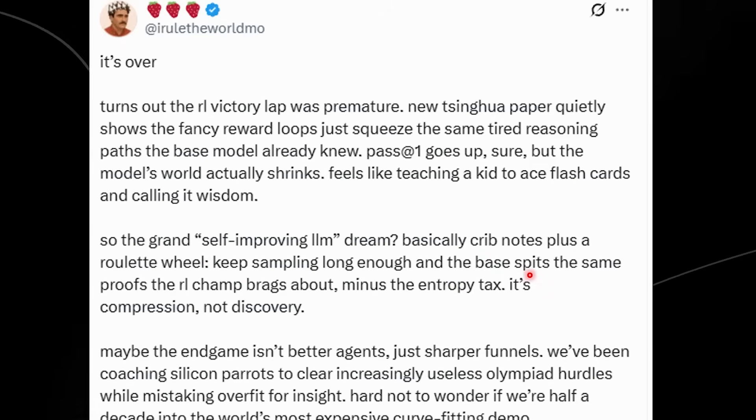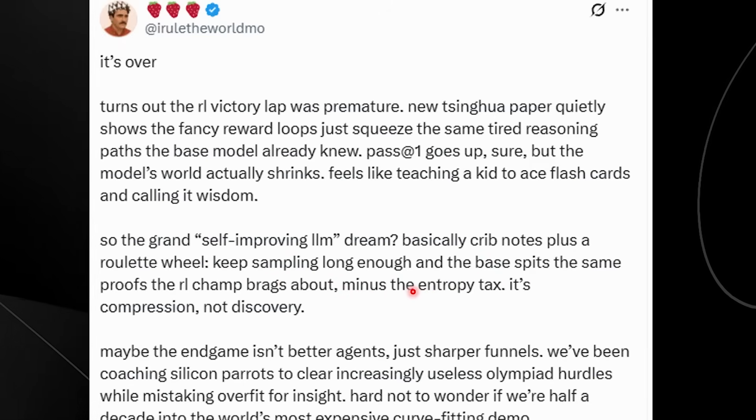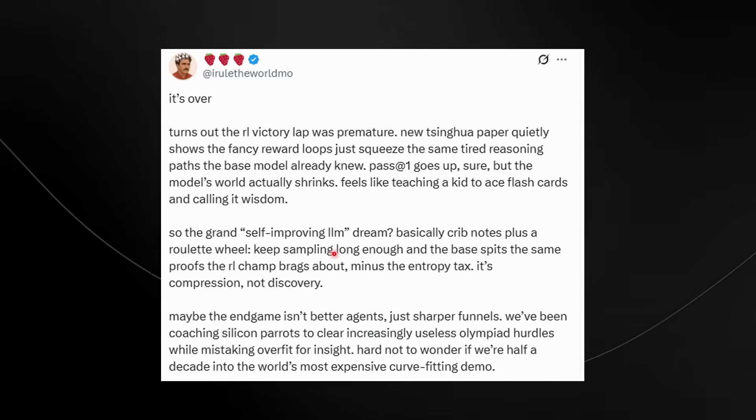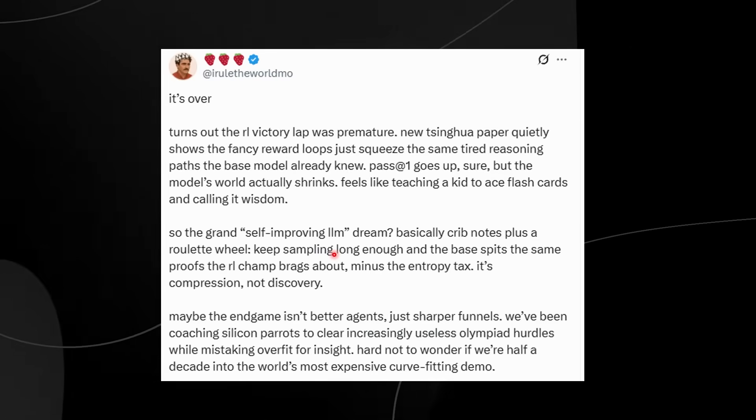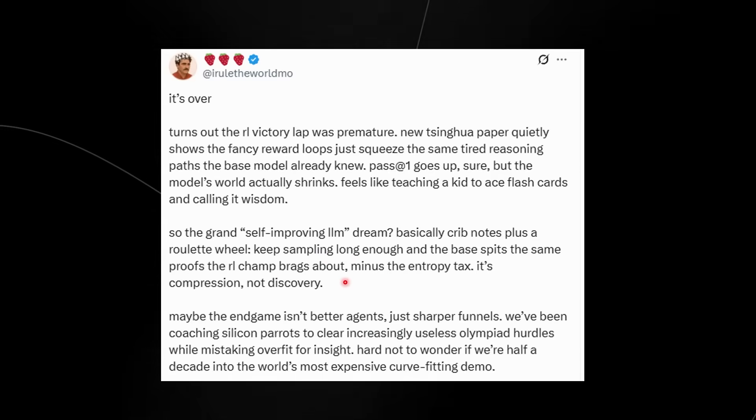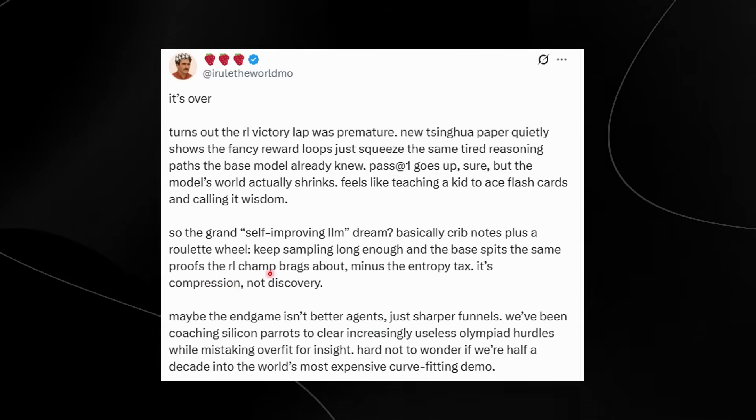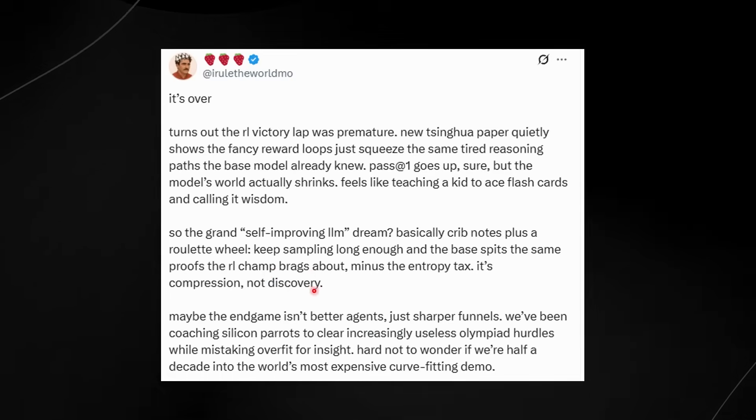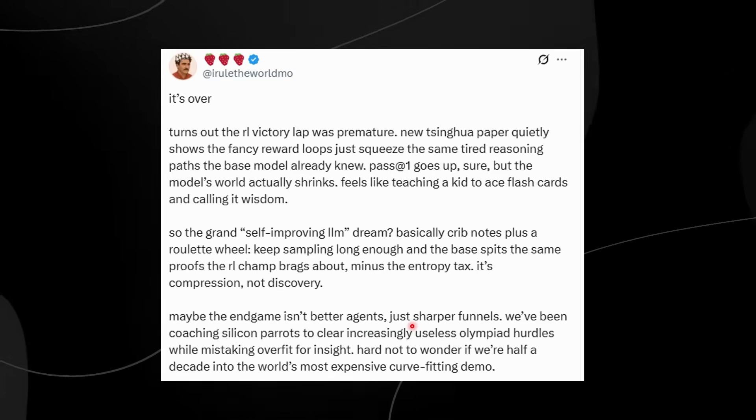So the grand self-improving LLM dream—basically crib notes plus a roulette wheel. Keep sampling long enough and the base spits out the same proofs that the reinforcement learning champ brags about, minus the entropy tax. So the dream of an AI teaching itself to become brilliant might just be a myth. If you just let the normal base model try enough times, it can eventually find the same answers as the reinforcement learning trained one. Reinforcement learning doesn't give new ideas, it just makes it bet smarter, not think smarter. We can see here that he says it's compression, not discovery. That reinforcement learning isn't making AI discover new ways to solve problems, it's just compressing its knowledge into more efficient patterns.